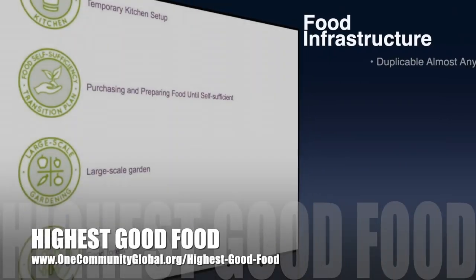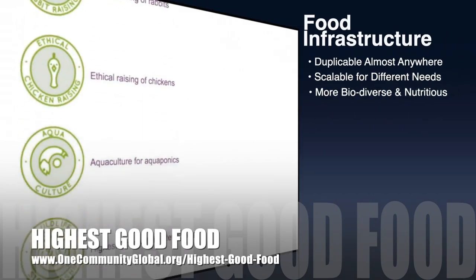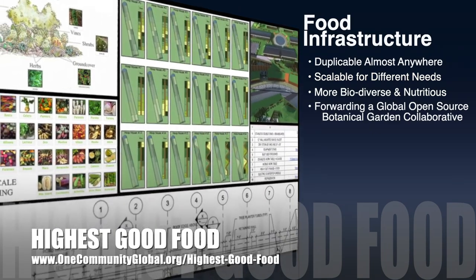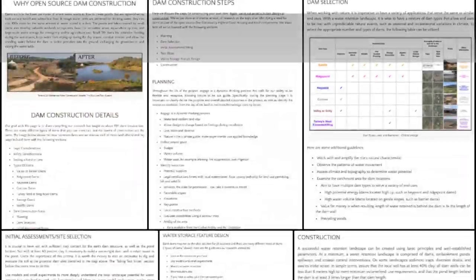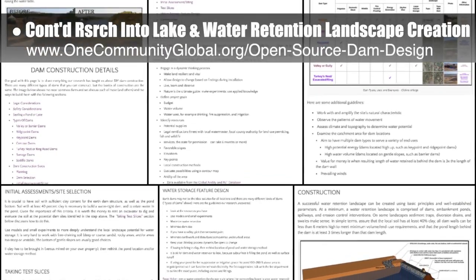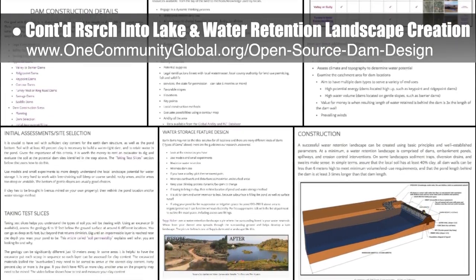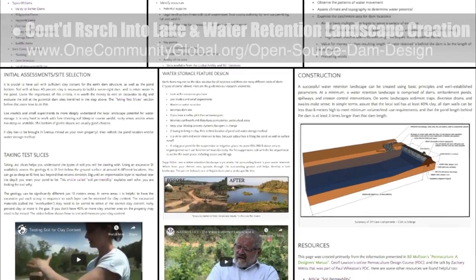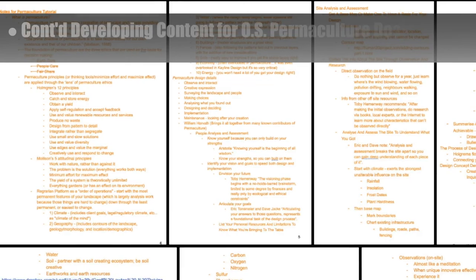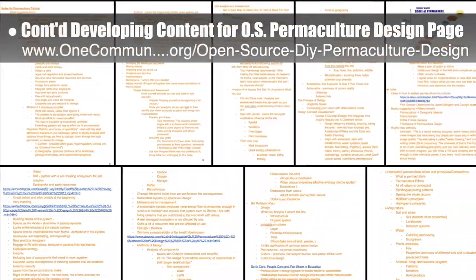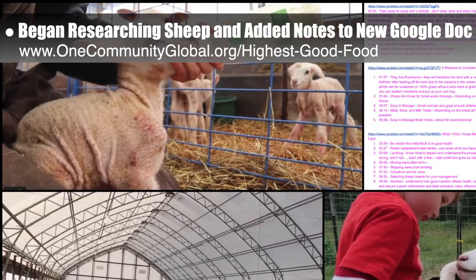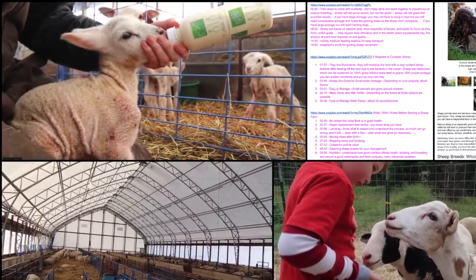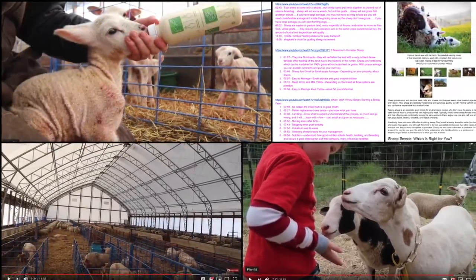One Community's approach to highest good food is duplicable almost anywhere, scalable for different needs, more biodiverse and nutritious, part of forwarding a global open-source botanical garden collaborative, and includes nine different free-shared and duplicable growing environments. This week, the core team continued with week 16 of the open-source lake and water retention landscape design tutorial, writing the why and details section and draft one of the construction steps. The team also continued developing behind-the-scenes content for the open-source permaculture design page, and began researching sheep by reviewing raising sheep basics, watching relevant videos, taking notes, and adding all learned content to a new sheep tutorial Google Doc.